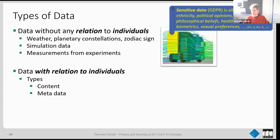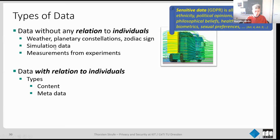Privacy laws further distinguish normal personal data from sensitive data. Sensitive data includes categories historically used to discriminate: ethnicity, political opinions, religious or philosophical beliefs, health data, biometrics, and sexual preferences. As soon as your data allows inferring any of this sensitive information, you're dealing with sensitive data, and processing it from a legal perspective is very difficult — you should really consult a lawyer.